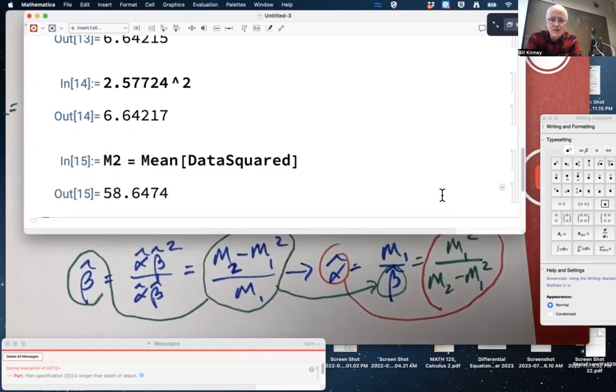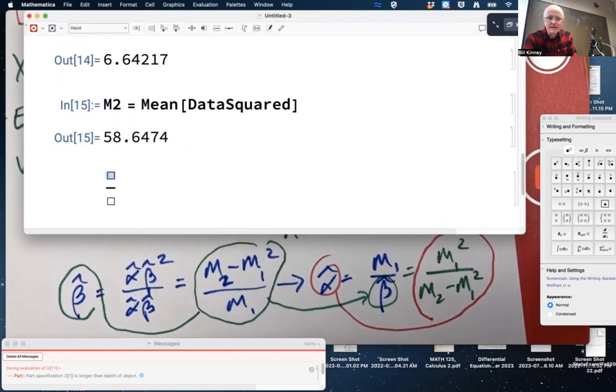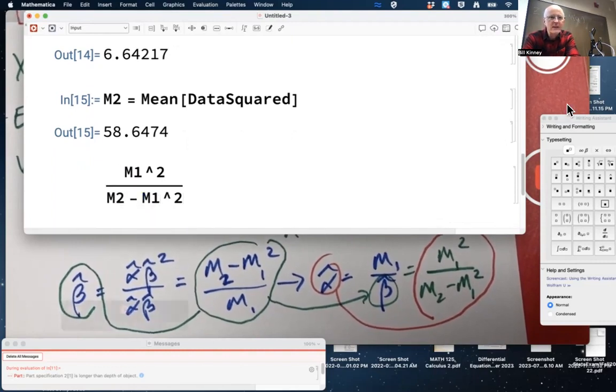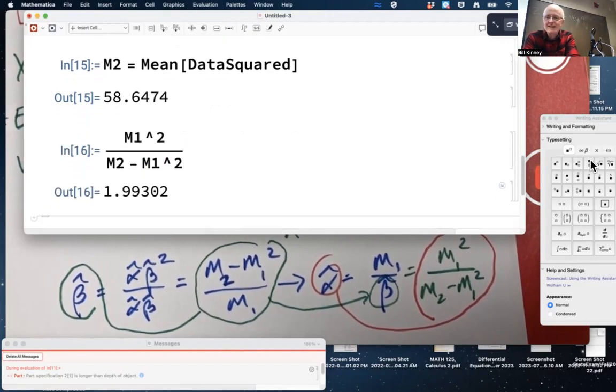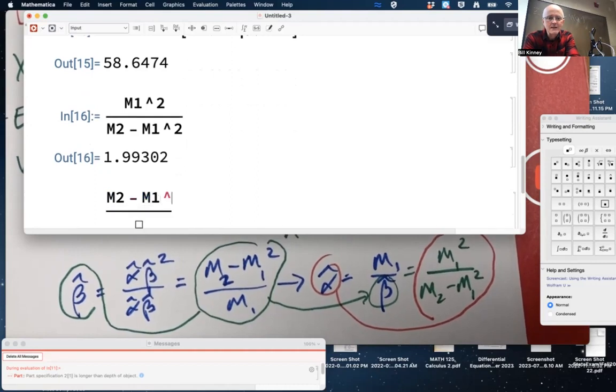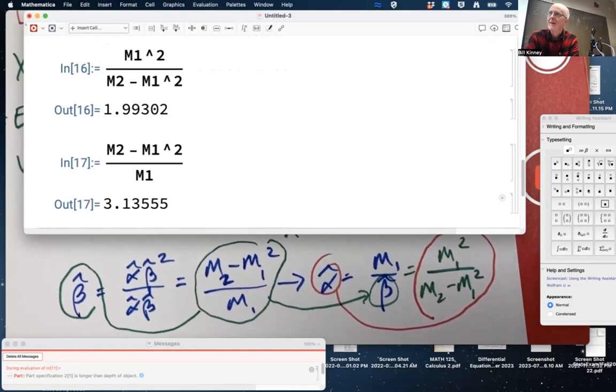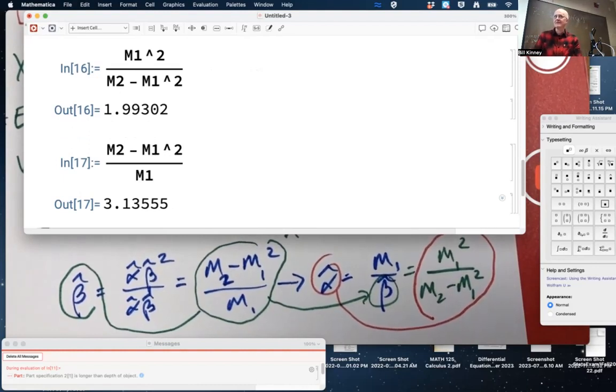So it's the mean of data squared. This is an arithmetic mean, right? This is adding them up because it's data and dividing by how many there are. 58.6474. So let's see. If I look at the alpha hat first, compute M1 squared divided by M2 minus M1 squared. Hopefully it's close to 2. Yeah. And if I compute M2 minus M1 squared divided by M1, hopefully that's close to 3. All right. Looking not too shabby, right? Seems, without doing an official statistical test, seems like it's doing a reasonable job. Okay, that's how you would apply what we've learned here with the method of moments.